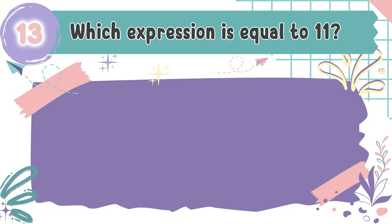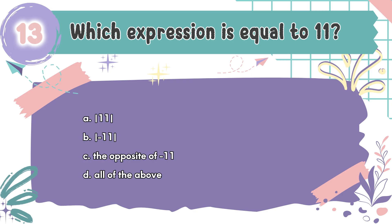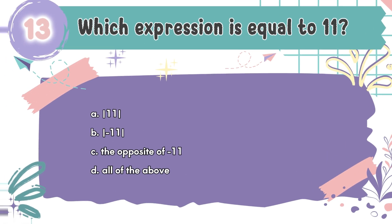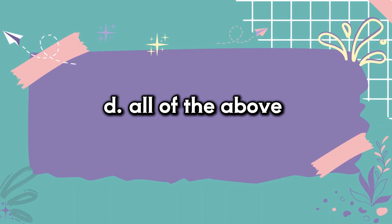Question number 13: Which expression is equal to 11? The choices are A. The absolute value of 11, B. The absolute value of negative 11, C. The opposite of negative 11, D. All of the above. The correct answer is D. All of the above. The opposite of negative 11 is 11 — all three expressions are correct.